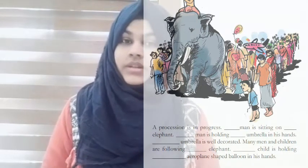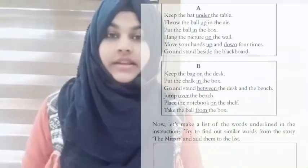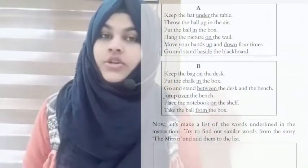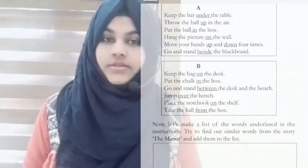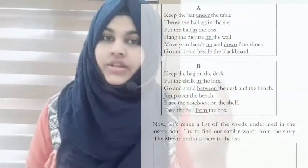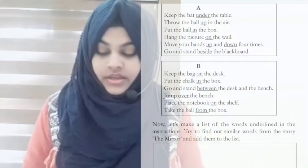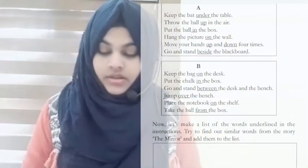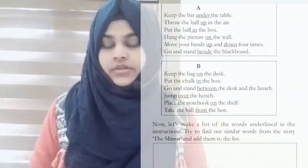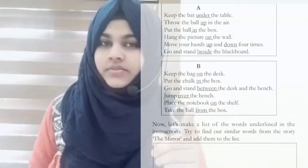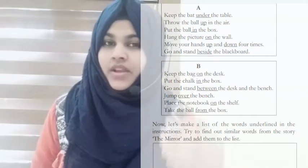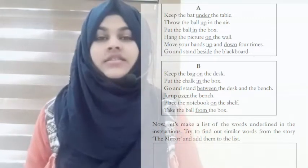Now, let us go to the next activity. My dears, here is your second activity. You can see here two boxes. Let me read it for you. First of all, keep the bat under the table. Keep the bat — where? Under the table.